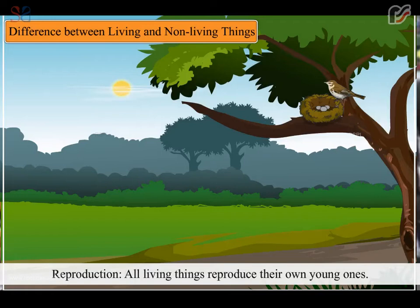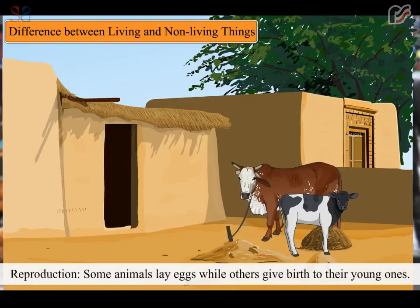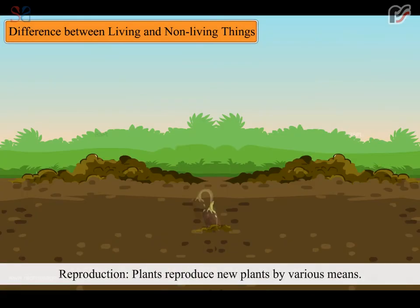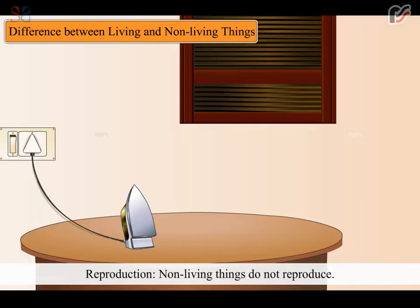All living things reproduce their own young ones. Some animals lay eggs while others give birth to their young ones. Plants reproduce new plants by various means. Non-living things do not reproduce.